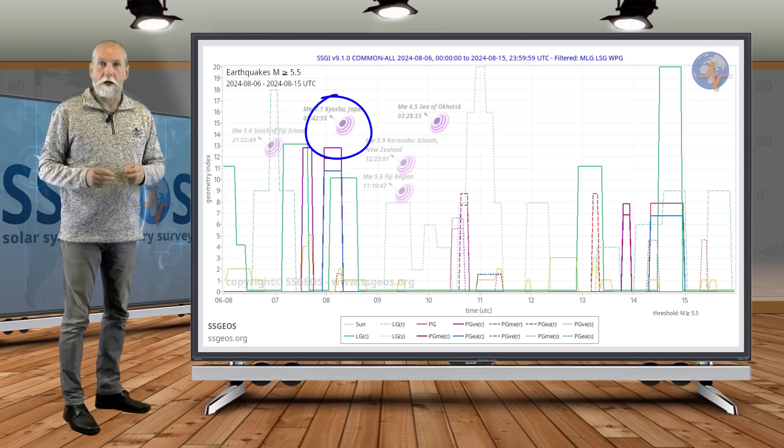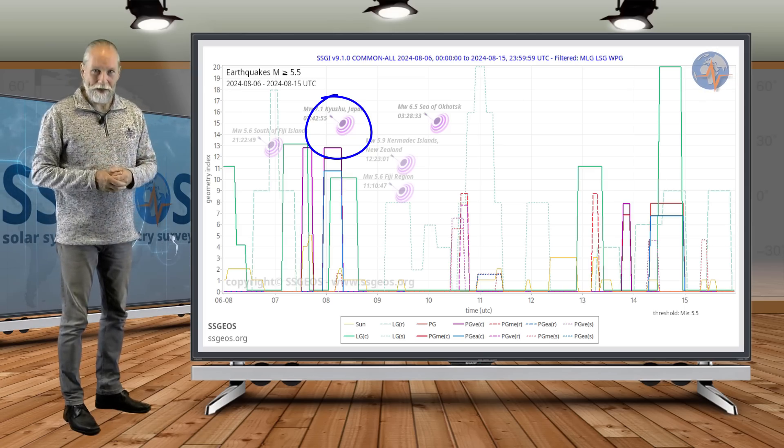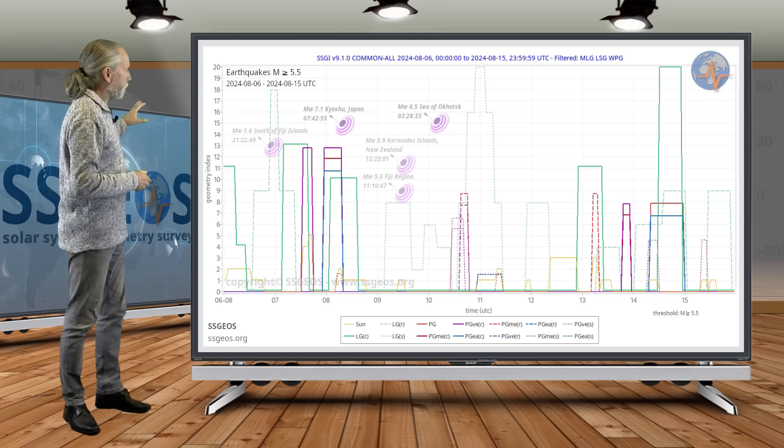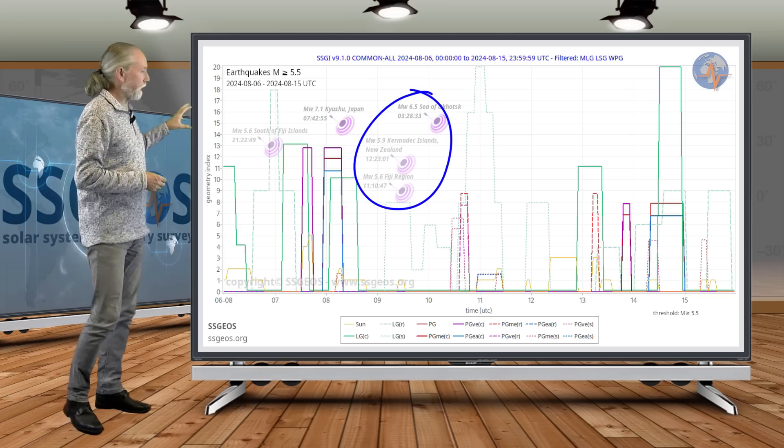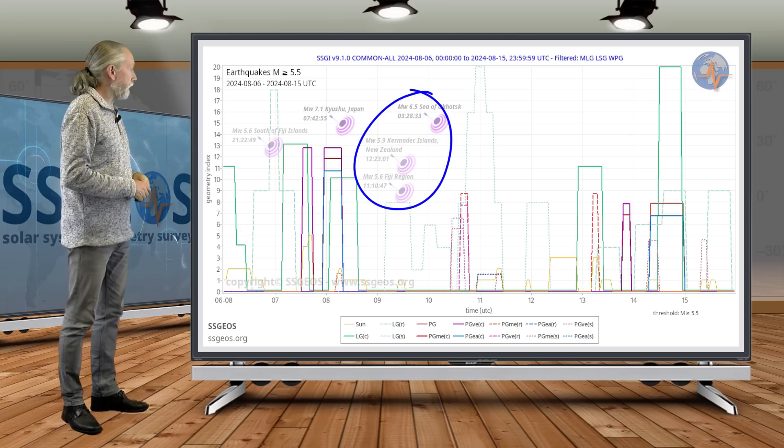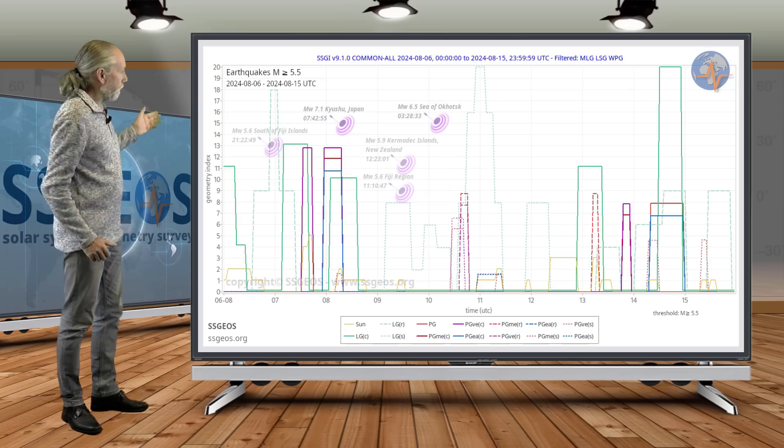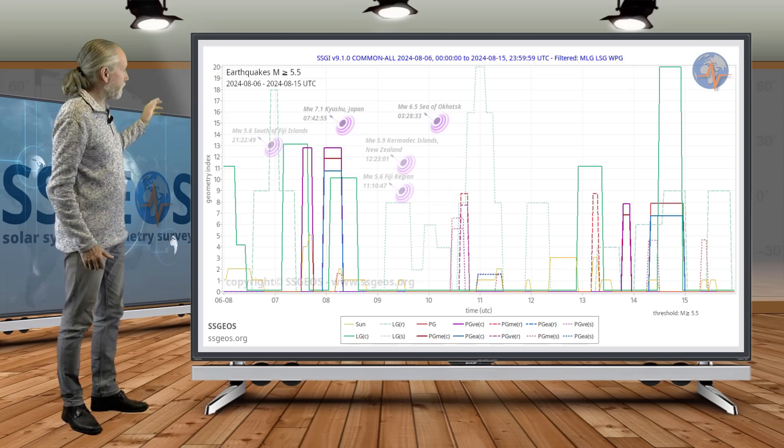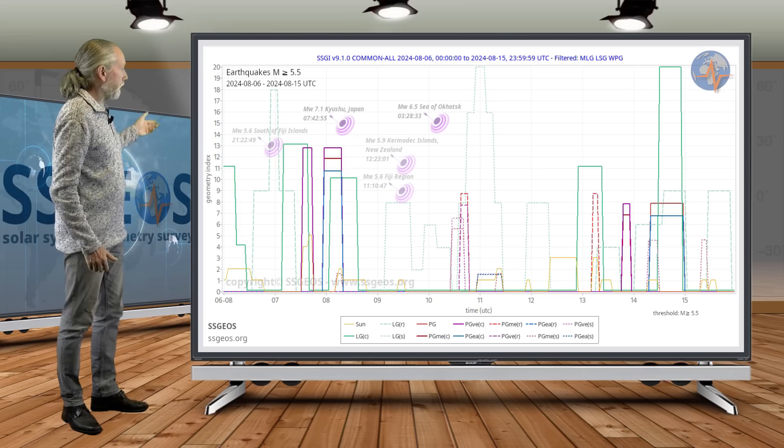we had a magnitude 7 earthquake that occurred on the 8th in Japan. We also see some clustering of strong earthquakes following that major earthquake on the 9th and early on the 10th, a 6.5 in the Sea of Okhotsk. So around the 9th was pretty accurate, our estimate there with this major earthquake and also a strong earthquake.